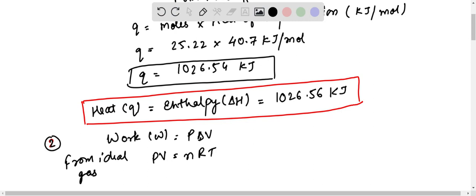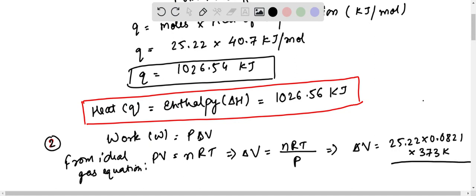So PV equals to nRT. Now this will be, PV or you can say delta V is given by nRT by P. Here delta V equals to n is 25.22 into 0.0821 into T is 373 K here. This is divided by whole as 1 ATM because pressure is also given to us.